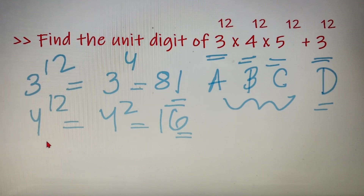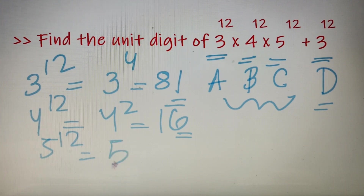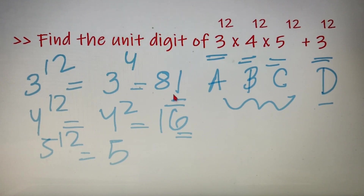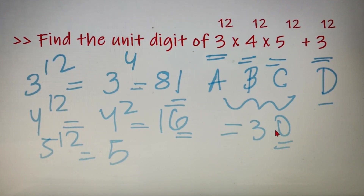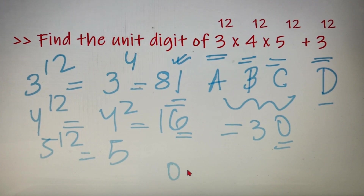Moving to our third number, 5 to the power 12: the unit digit of 5 raised to any power is always 5. So we have all three unit digits: 1, 6, and 5. The product of these three is 30, and the unit digit of 30 is 0. Now we separately find the unit digit of 3 to the power 12, which is 1. So our final answer is 0 plus 1, which equals 1.